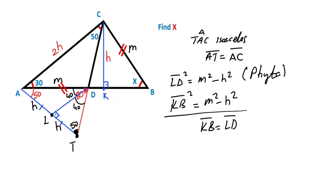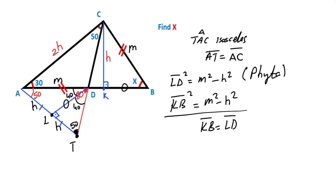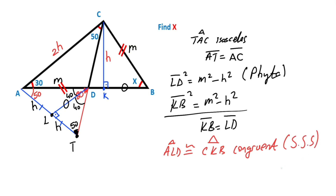Therefore these two sides are equal. Notice that these two triangles must be congruent — triangle ALD and triangle CKB are congruent by the side-side-side similarity theorem. So if there is a 40 degrees opposite the h unit in one triangle, the angle opposite h in the other must also equal 40 degrees.